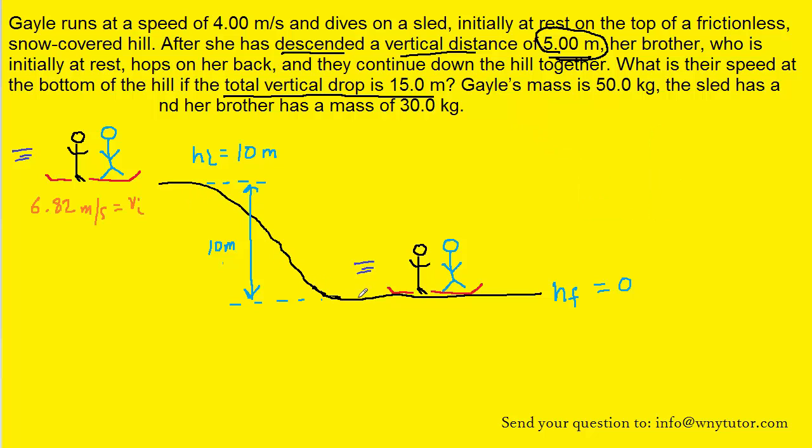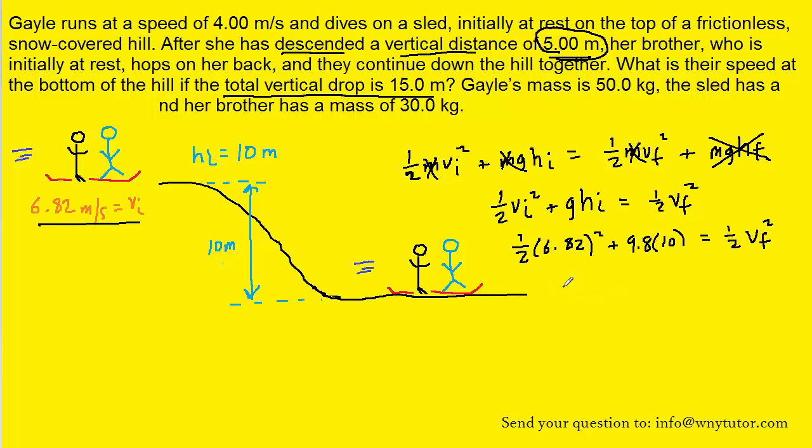We can use the conservation of energy again. Since the final height of Gale and her brother is 0, we can eliminate this term. Also notice that the mass appears in all three terms, so that too can be eliminated from the equation. We can now plug in the known values. Remember the initial speed of Gale and her brother was 6.82 meters per second, which we calculated in the previous part of the problem. And when you solve for the final speed, you should get 15.6 meters per second. That'll be the final speed of Gale, her brother, and the sled at the very bottom of the hill.